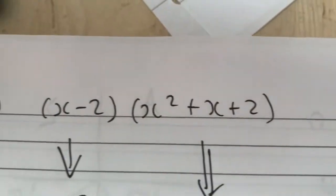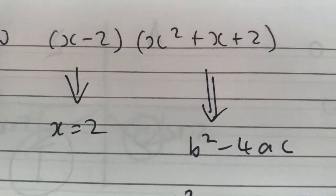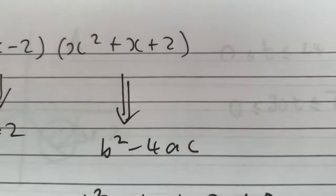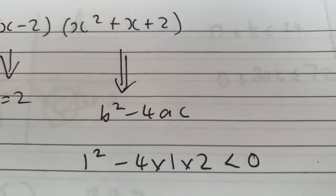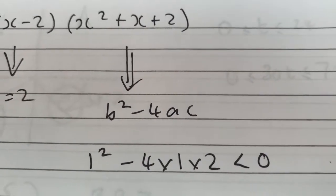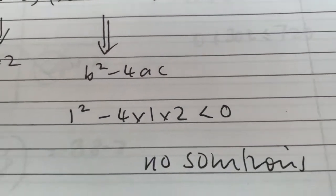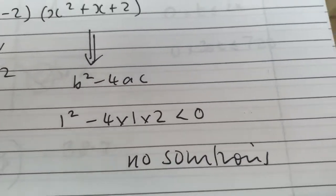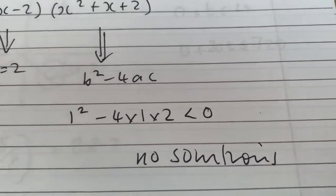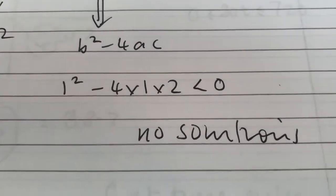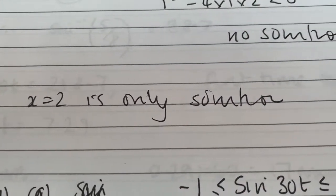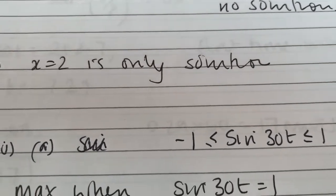I know that x - 2 has the solution x equals 2. I need to show that that's the only solution. So it means that x² + x + 2 mustn't have any solutions. The best way to do that is use the discriminant. Show it. You know, 1² - 8 is going to be negative 7, which means no solutions. So x equals 2 is your only solution.